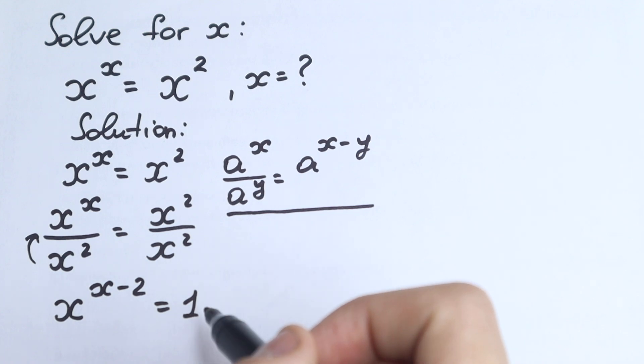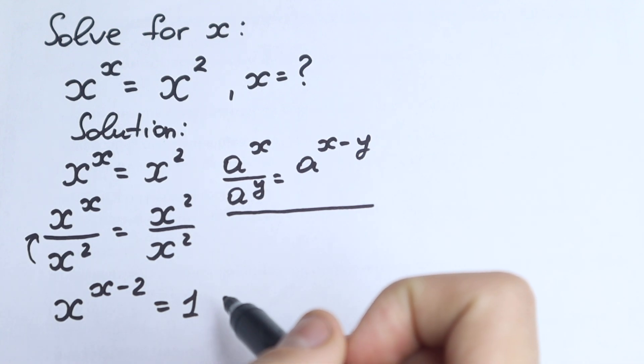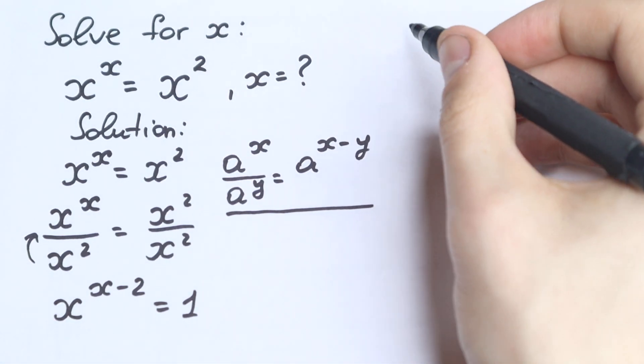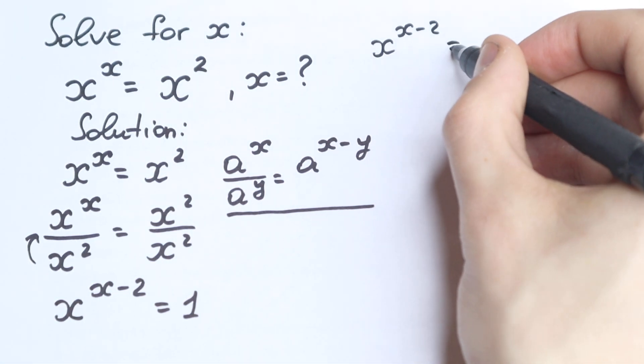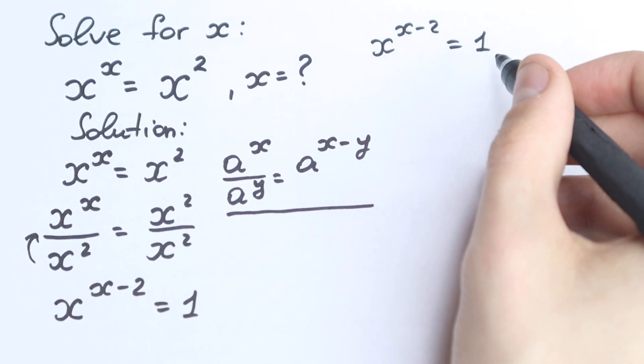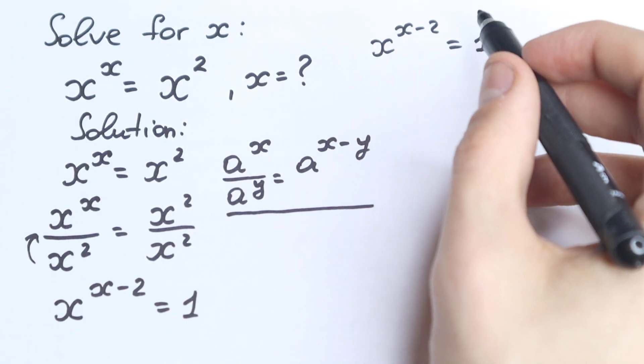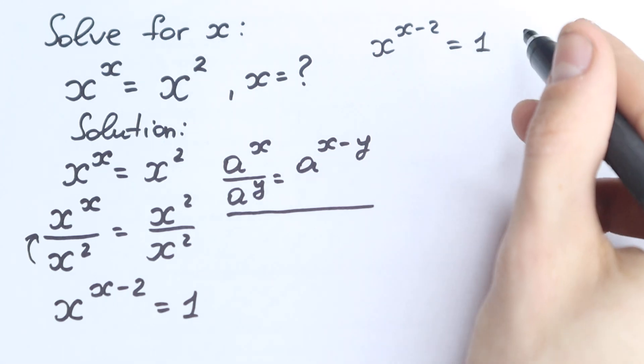Right here we have a really interesting expression and let's try to solve it. Let's try to find our answer, how can we solve this correctly. So I rewrite this expression right here. So we have x to the power x minus 2 equal to 1. Right now I suggest you to look at natural log real quick, to remember or to learn about natural log.